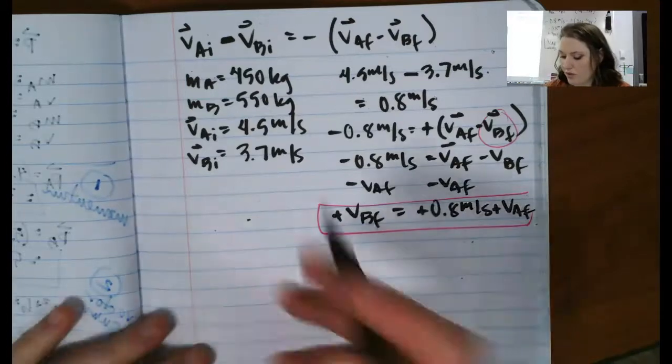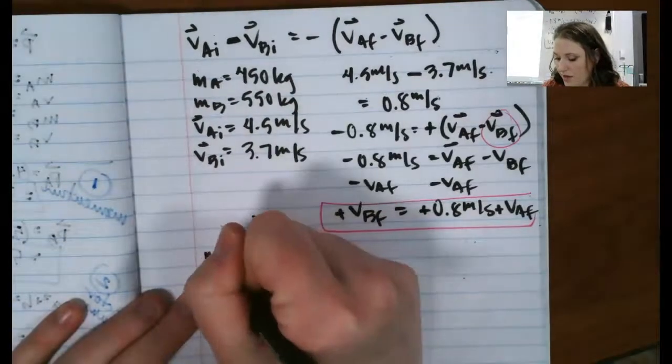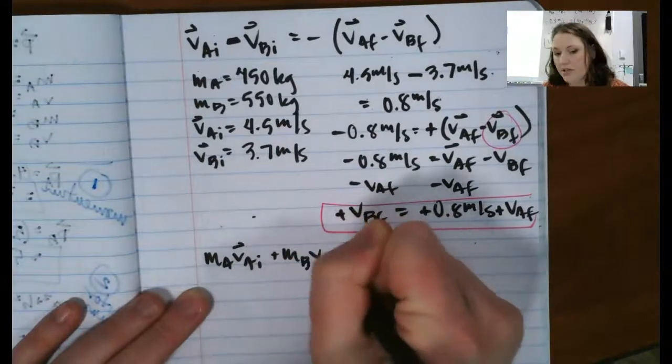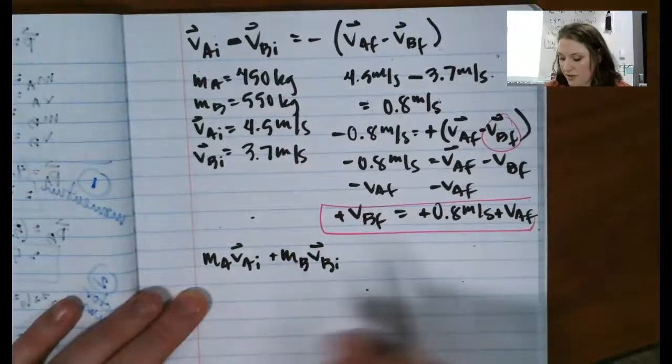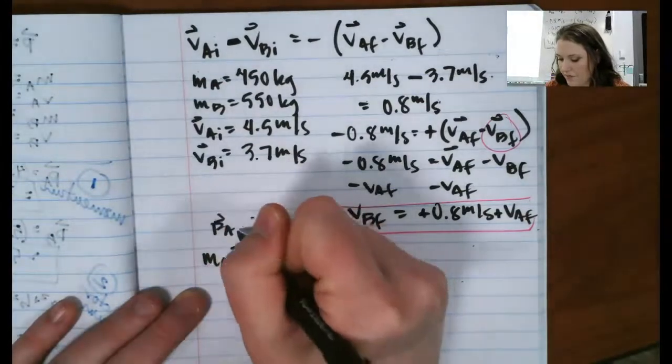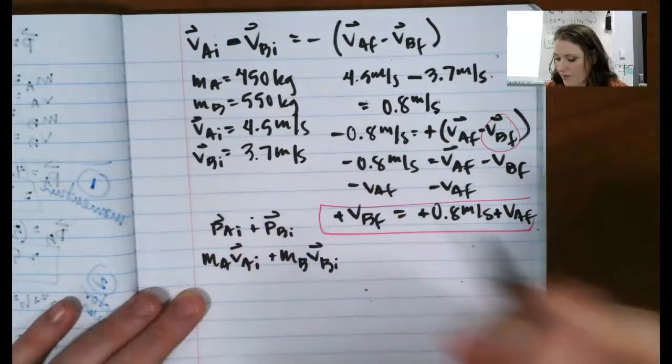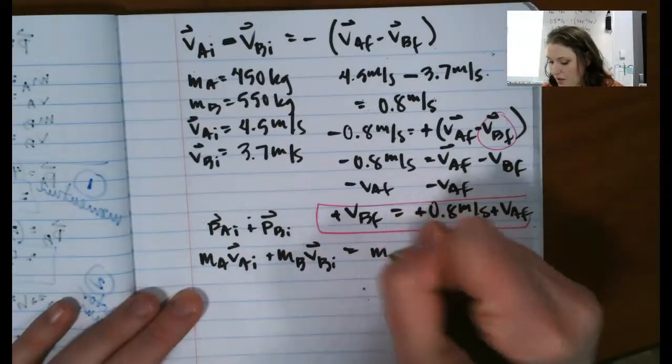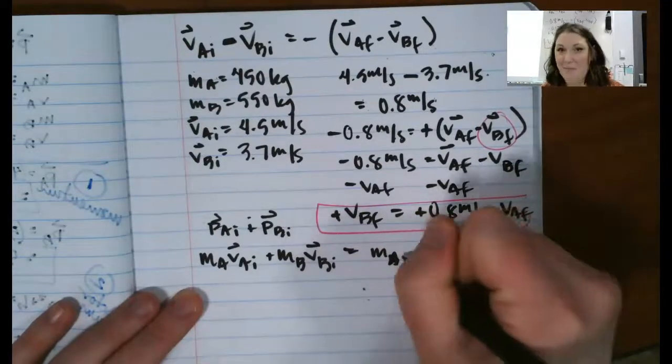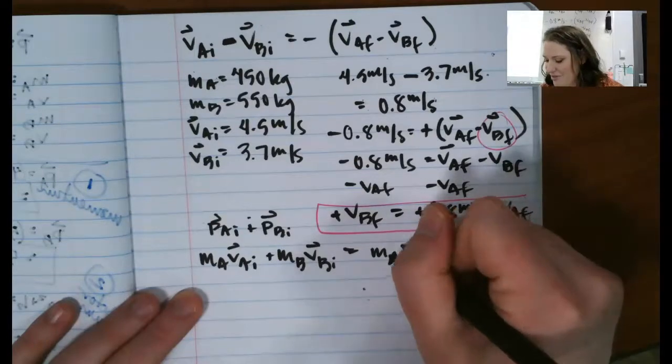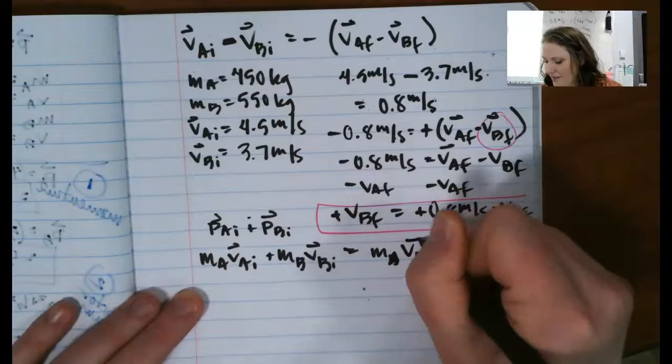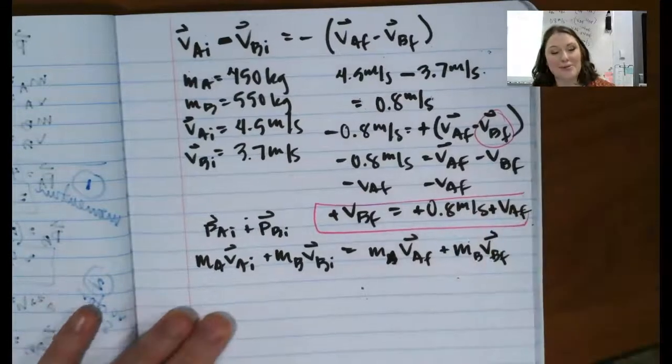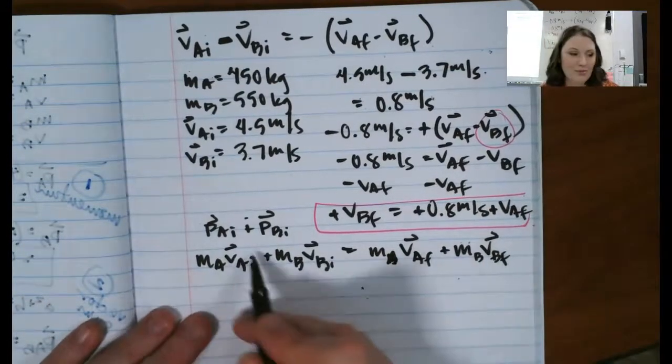So momentum is conserved in all collisions. So that means that mass of car A times the velocity of car A initial plus the mass of car B times the velocity of car B initial. That's my momentum beforehand, right? That's what this is I'm writing out. That has to be equal to the two momenta afterwards. So the momentum of car A, the mass of car A times the velocity of car A final times the mass of car B times the velocity of car B. Just in case you think you don't ever make mistakes with your words, right? I can find these two numbers.